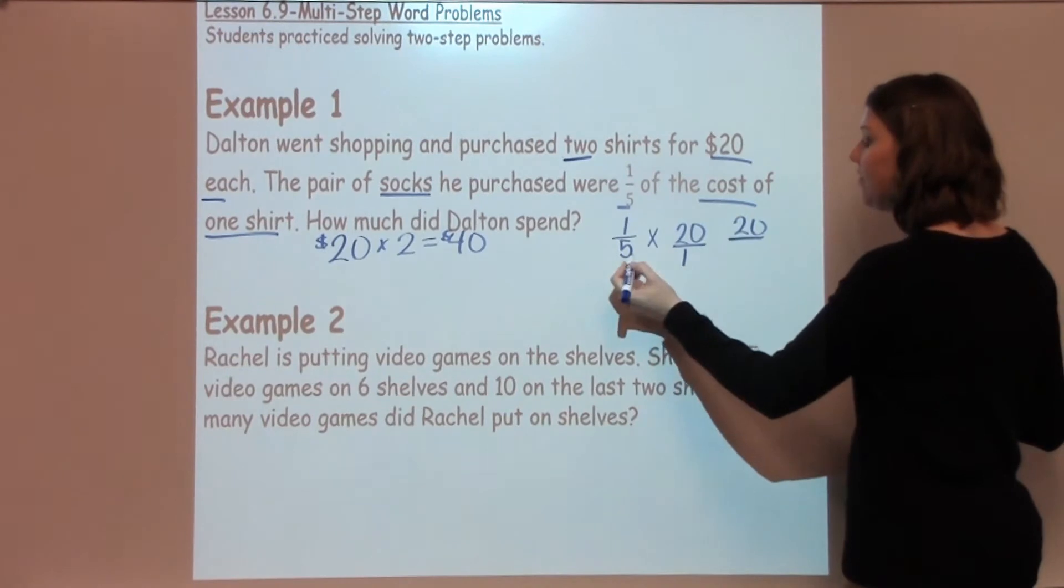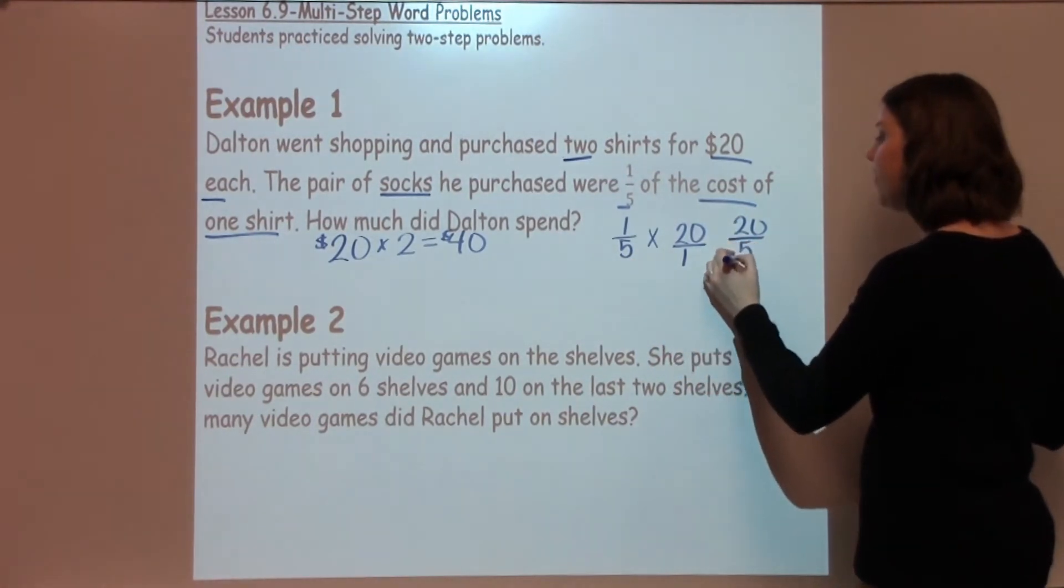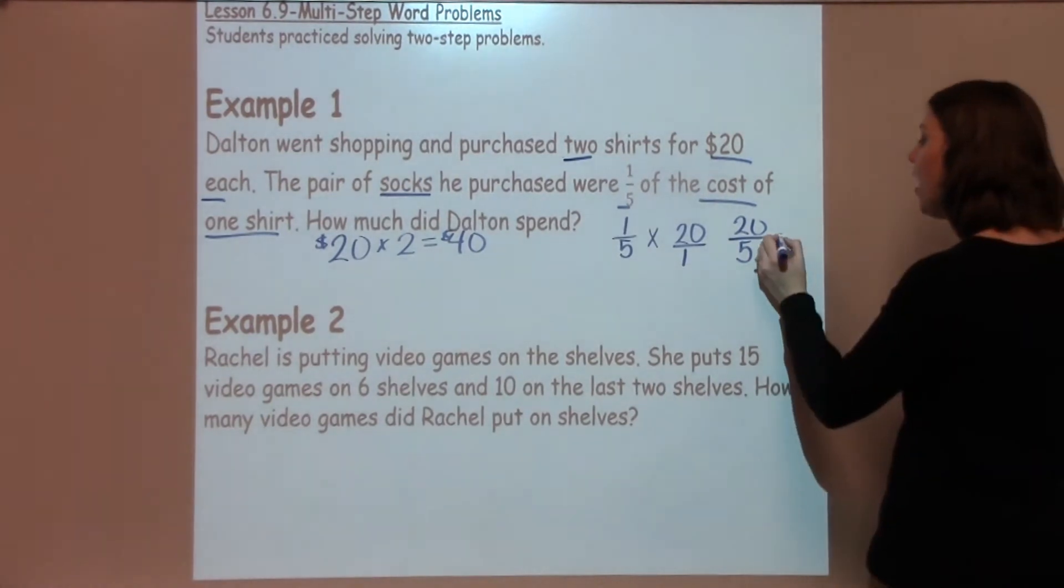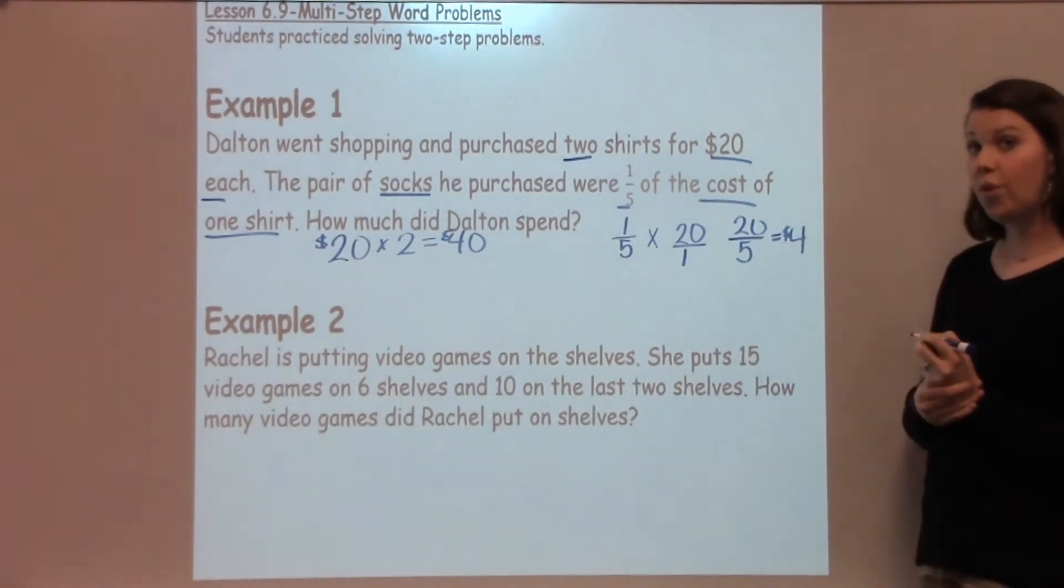I have 1 times 20, which is 20, and 5 times 1, which is 5. 20 divided by 5 is 4, so I know that the socks cost $4.